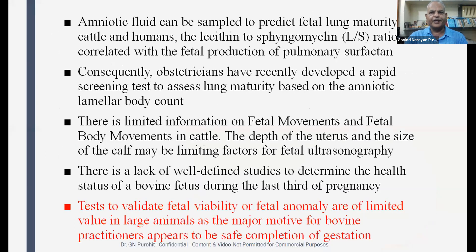There are a few reports that allantoic fluid can be used to predict fetal lung maturity. When a pregnancy is at risk, one has to evaluate the fetus for lung maturity. If you terminate a pregnancy without fetal lung maturity, the fetus may not survive. In cattle and humans, the lecithin-to-sphingomyelin ratio is correlated with fetal production of pulmonary surfactants, but detection continues to be poor in cattle and the technique generally causes abortion.